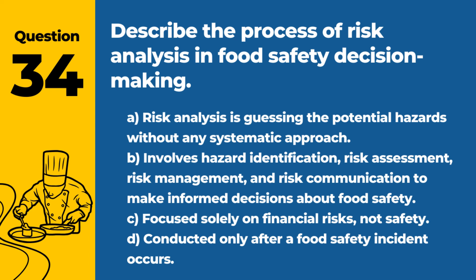Question 34. Describe the process of risk analysis in food safety decision-making. a. Risk analysis is guessing the potential hazards without any systematic approach. b. Involves hazard identification, risk assessment, risk management, and risk communication to make informed decisions about food safety. Answer: b. A systematic approach to risk analysis is fundamental for effective food safety management.